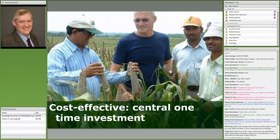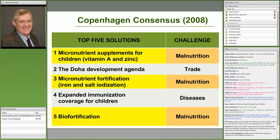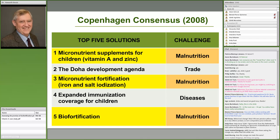The Copenhagen Consensus is a group of economists that ranks investments in developing countries every few years. In 2008, they were asked to pick the 20 most cost-effective investments, and three out of the top five related to reducing mineral and vitamin deficiencies. Even though biofortification hadn't been fully implemented at that point, our ex-ante benefit-cost analyses were convincing enough that they ranked biofortification as the fifth most productive investment that could be made.